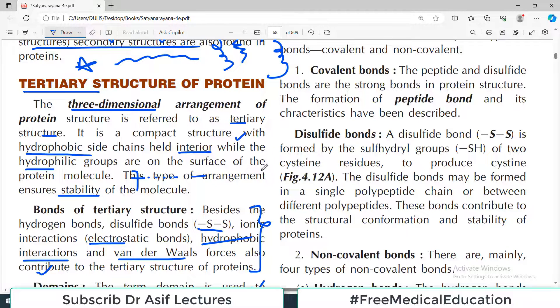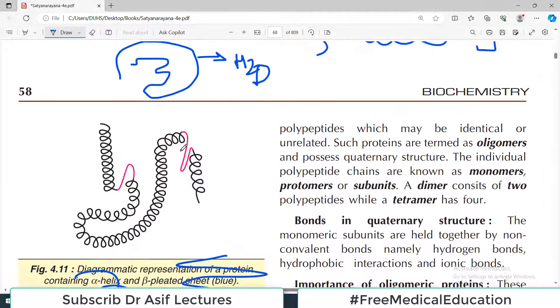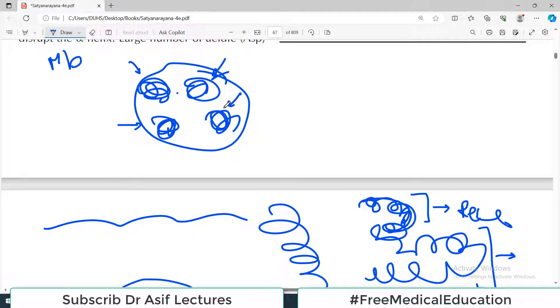Now sometimes what happens - most proteins end at the tertiary structure, but sometimes, like hemoglobin for example, there are multiple protein chains. One globin unit, second globin unit, third globin - there are multiple globin units. So one peptide chain which has its own primary, secondary, and tertiary structure. Another peptide chain here, another peptide chain here, another peptide chain here. All these peptide chains are joined together and make one large protein.